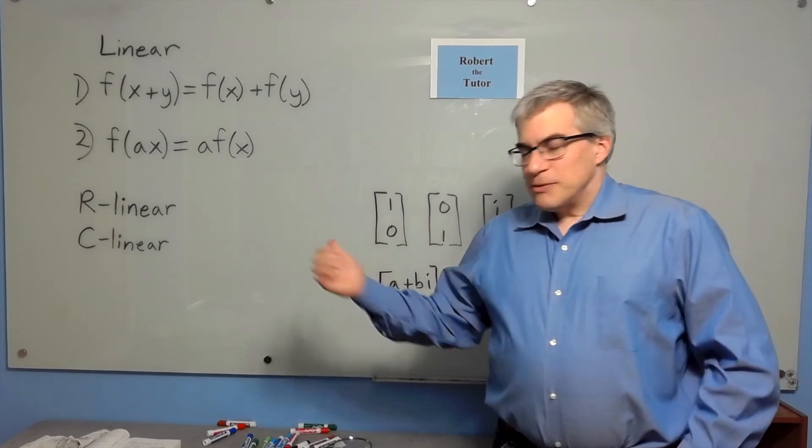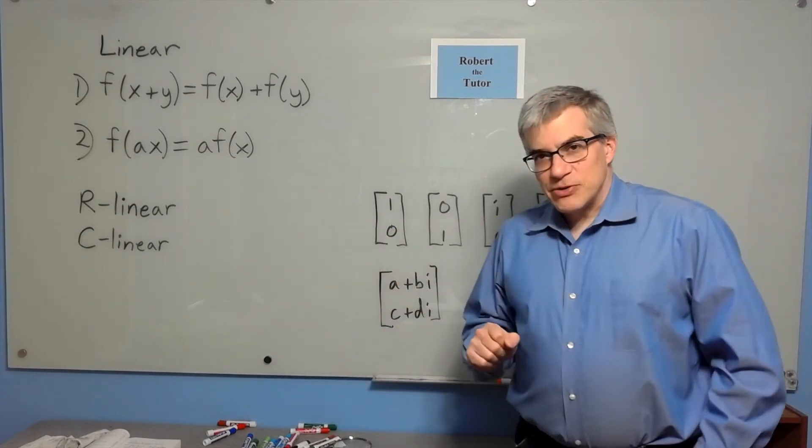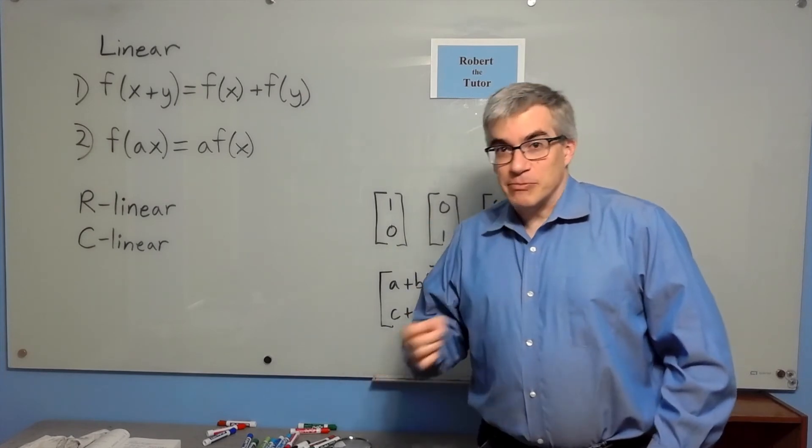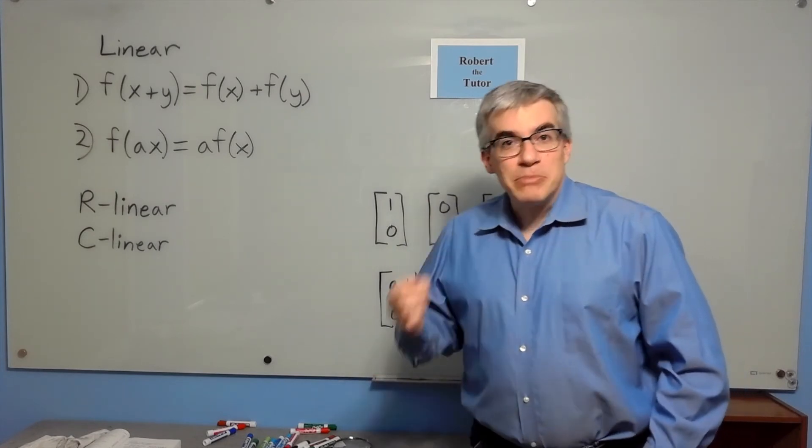But sometimes it's important, and you have to think about it consciously. So if we're talking about how many dimensions this vector space has, we have to say, well, which vector space? Vector space over the real numbers or vector space over the complex numbers?